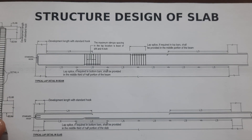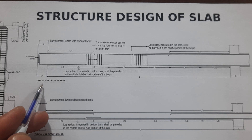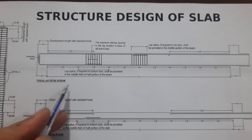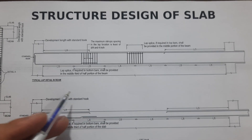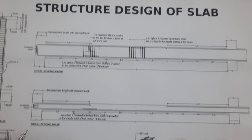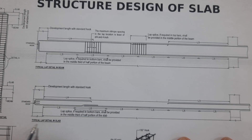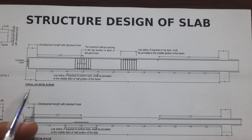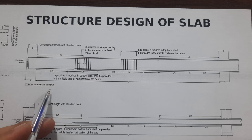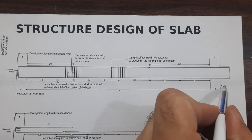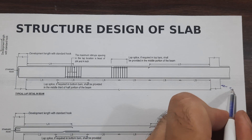First of all, you can see here this is the typical slab detail and beam. Here you can see this is the beam and this is the typical slab design — slab detail and slab. The first one here is the beam, and you can see this is one support, which is the column.